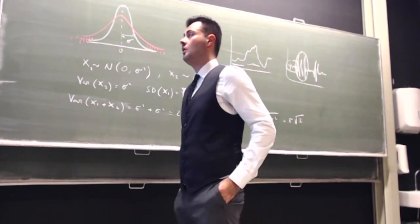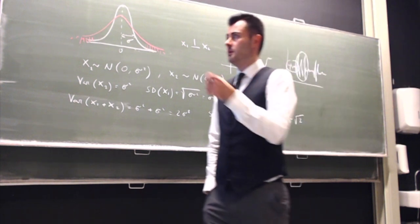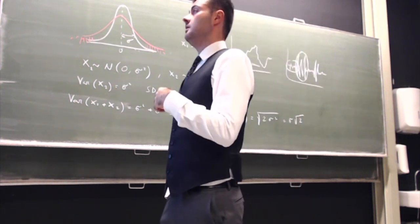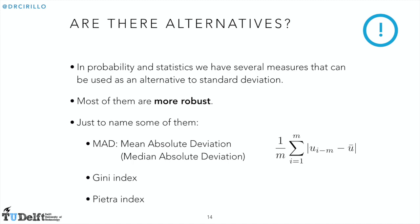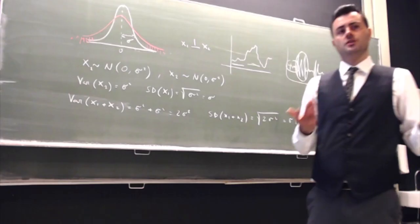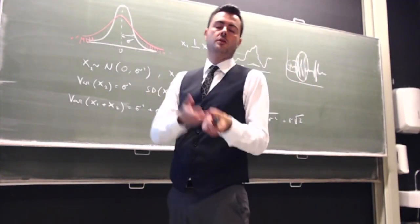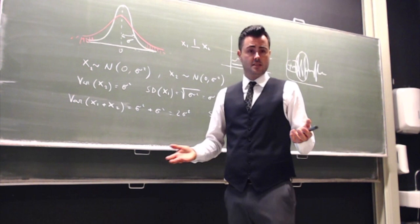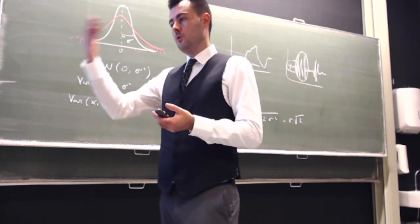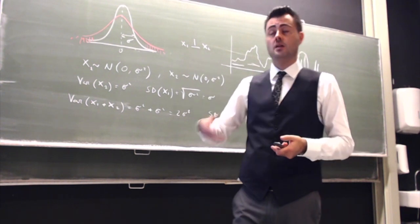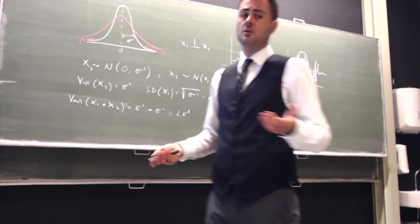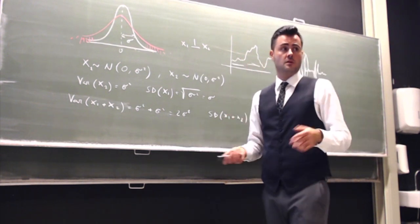In situations where the standard deviation is not an appropriate measure of volatility — such as fat-tailed distributions — you can use other tools. There are many alternatives: the MAD, which can be the mean absolute deviation or sometimes the median absolute deviation; indices of variability like the Gini index or the Pietra index. These measures will not be used in this course, but they exist and can be used. If you continue studying risk management, knowing that there are alternatives is always valuable.